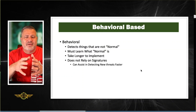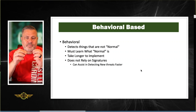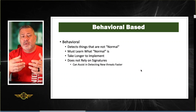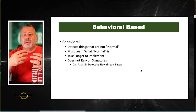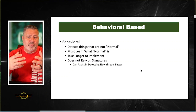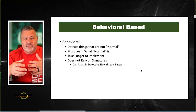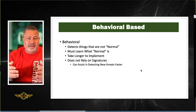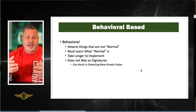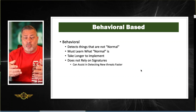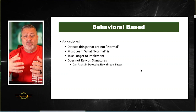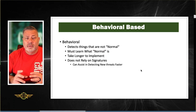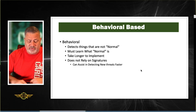Behavioral-based systems, on the other hand, detect things that are not normal — and to do that, they first have to learn what normal is. For that reason, they take longer to implement; the system must monitor your network and learn what normal traffic looks like. Once it learns what's normal, it finds anomalies and reports on them. It doesn't rely on signatures, so it can be faster at detecting new threats. However, if you change operations — like moving people remote — that could generate a lot of false positives.